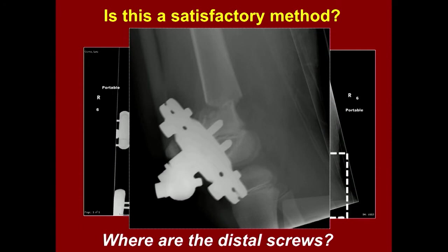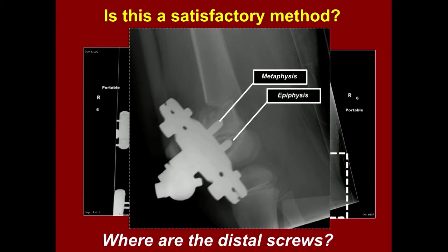As you can see here, you can control the deformity. There's a little posterior translocation, but that will remodel. The key is that you've controlled the rotation, requiring two-point fixation — one in the metaphysis and one through the epiphysis. If you put more than two screws in the epiphysis, one will probably be in the joint.